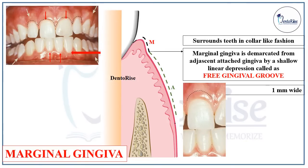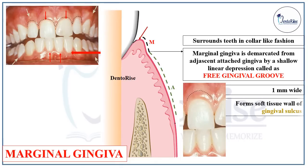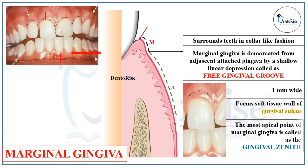If you talk about the surface of this marginal gingiva facing towards the teeth — that is, the soft tissue wall of marginal gingiva — this soft tissue wall forms the gingival sulcus. The most apical point of the marginal gingiva is called the gingival zenith, marked in the figure on the extreme right with the help of a blue arrow.